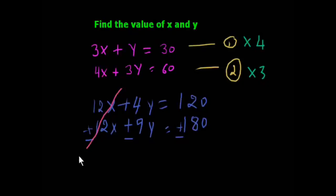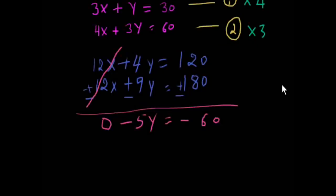Minus 12x will be 0. This will be 0. 9y minus, 9 minus 9 plus 4 will be minus 5y. Power of minus is more than power of plus. And minus 180 plus 120 will be minus, and sign will be minus. This will be minus 60.